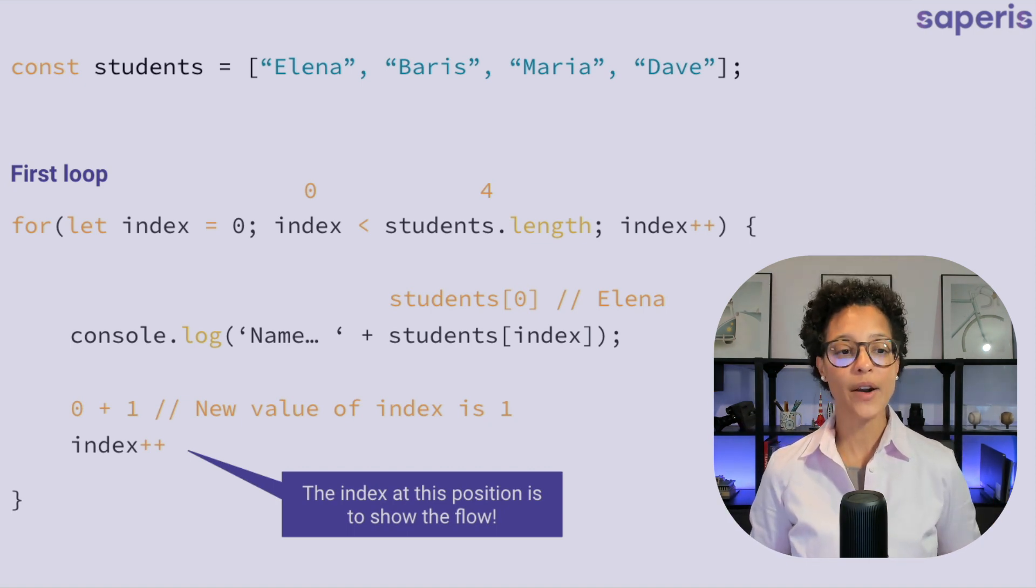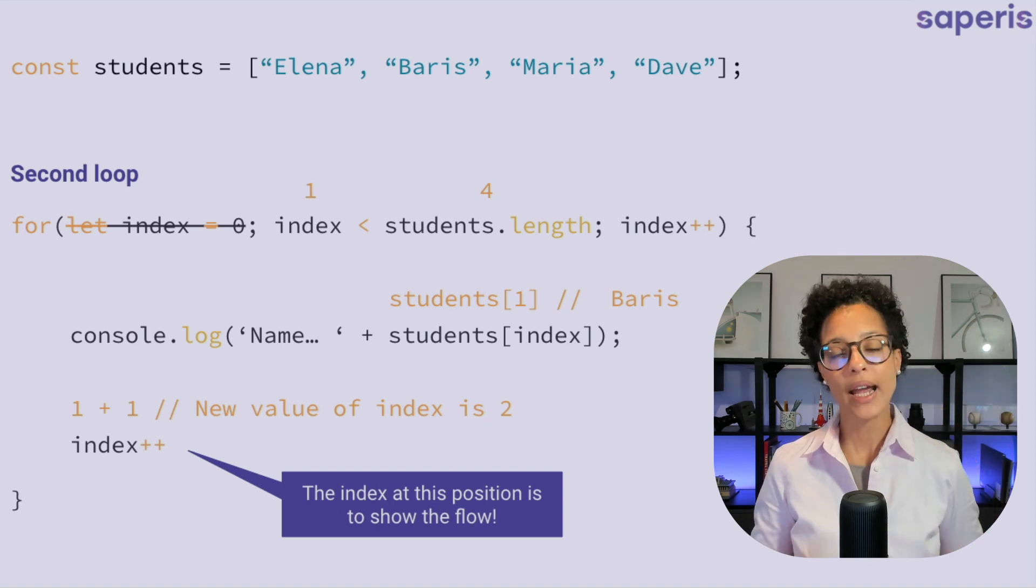Meaning that on our second loop, guess what happens? Yes. Index contains the value of one. And by the way,